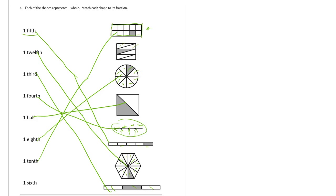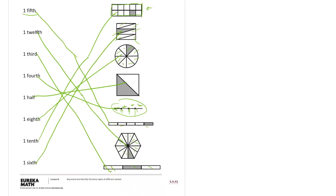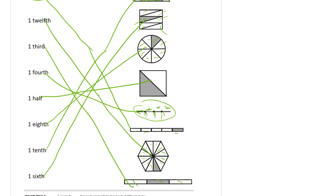And then we have a sixth. So is this right? One, two, three, four, five, six pieces. Those are sixths. One of them shaded. So that's one sixth. And there's our matchups.